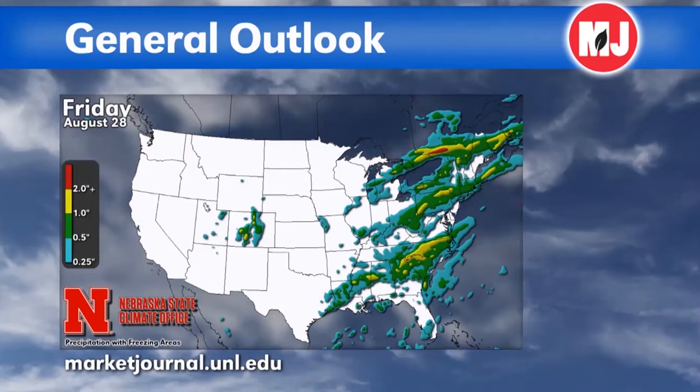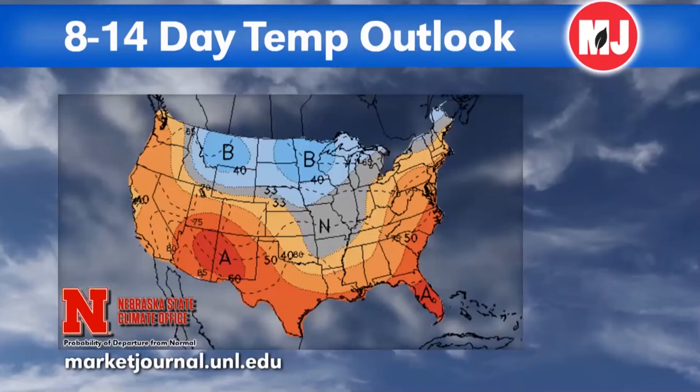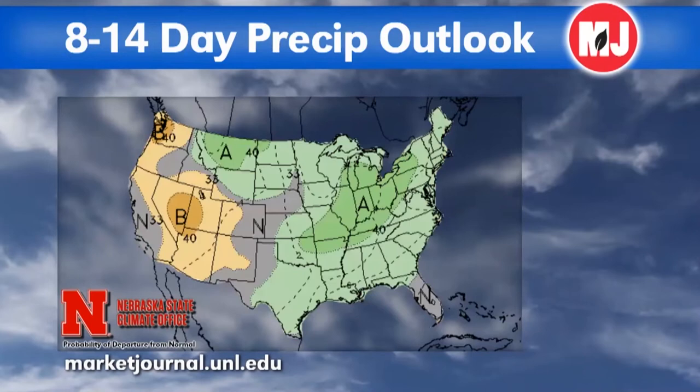Looking at the 8-to-14-day forecast, a low pressure system develops more intensely over the northern plains, bringing cold air into the region. From next Thursday to the following Tuesday, there's at least normal to possibly above-normal precipitation expected for the state. Overall, hot conditions will continue through the end of next week before cooling down with increasing chances of precipitation. Crops are definitely going to suffer this coming week.